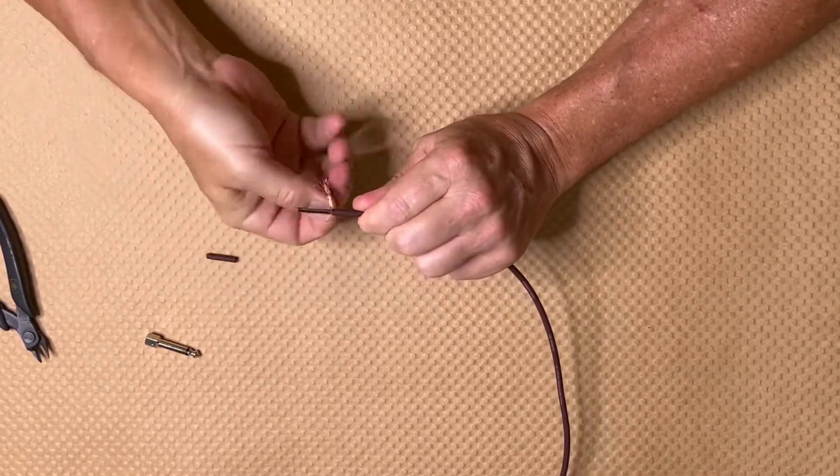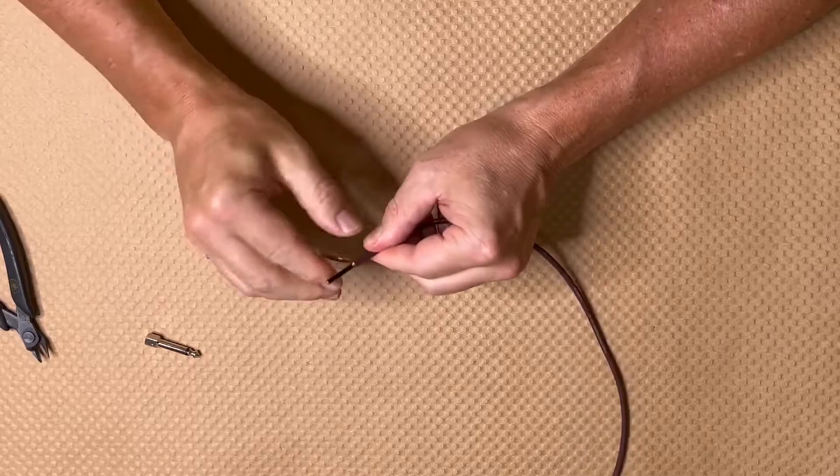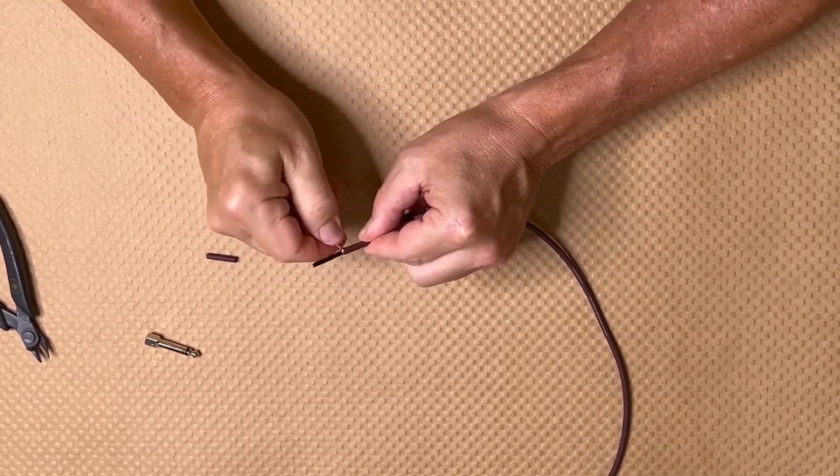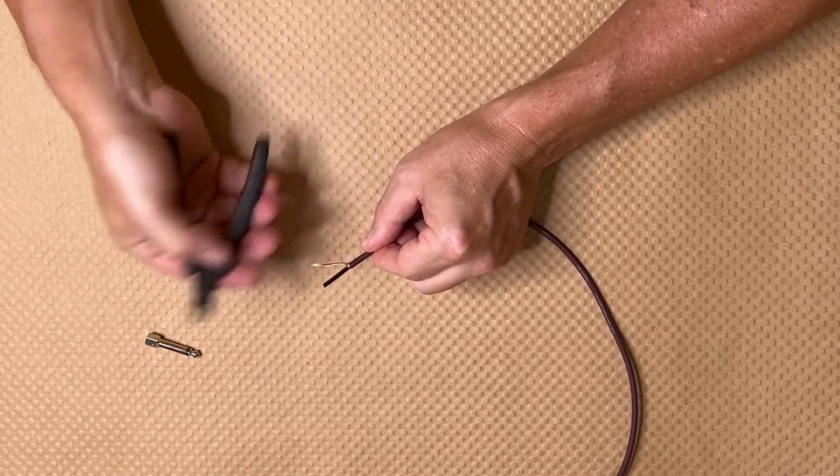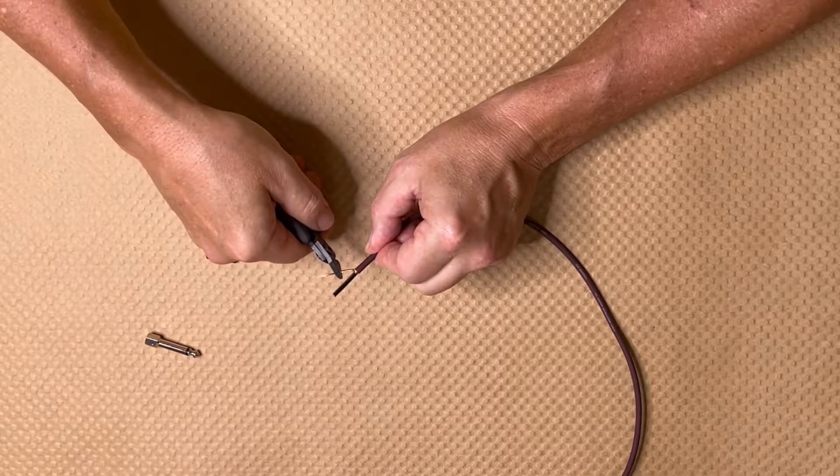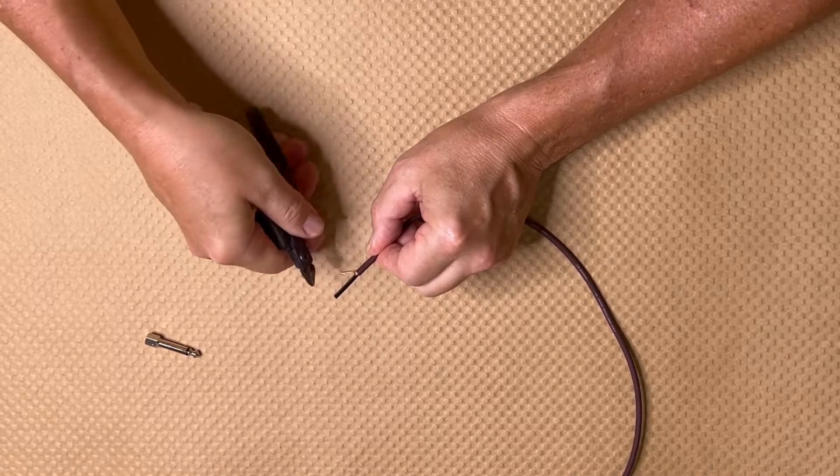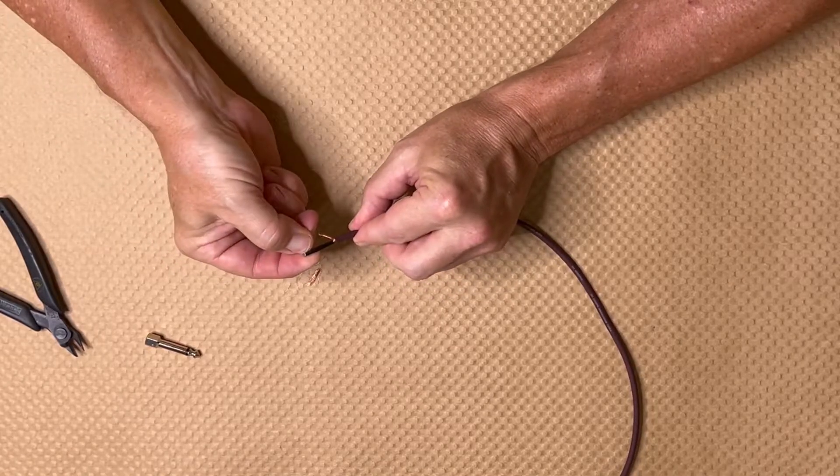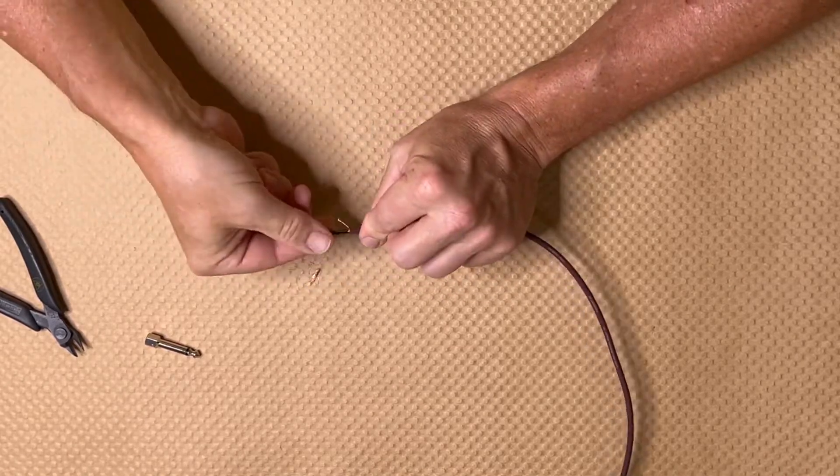I'm just going to take the shield, pull it all to one side, and cut that to length. Again, after you make enough of these you can do it by eyeball, but for the first couple you make, check the instructions. I've got to take away this black conductive skin.